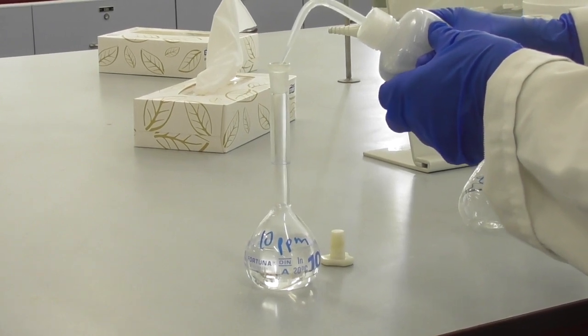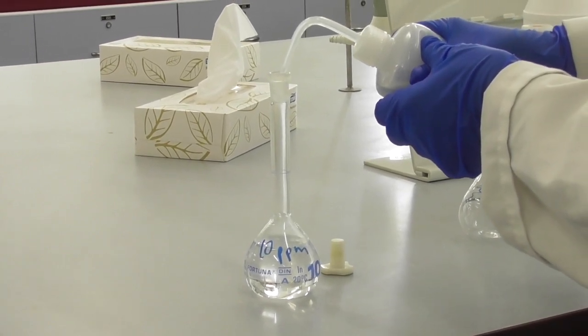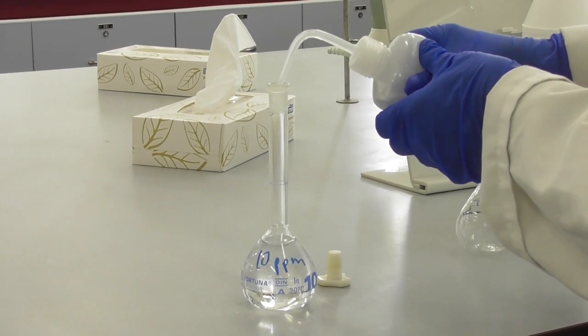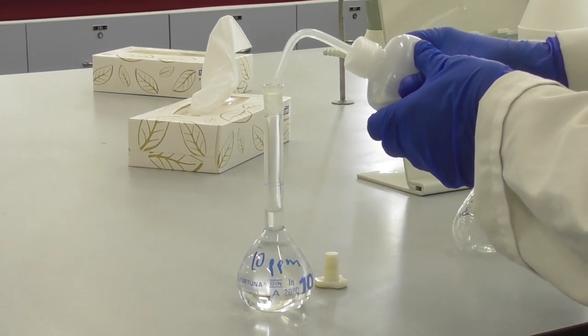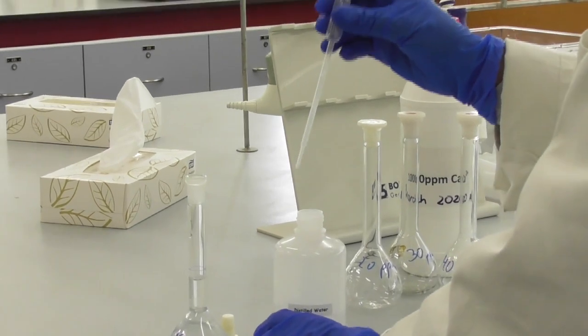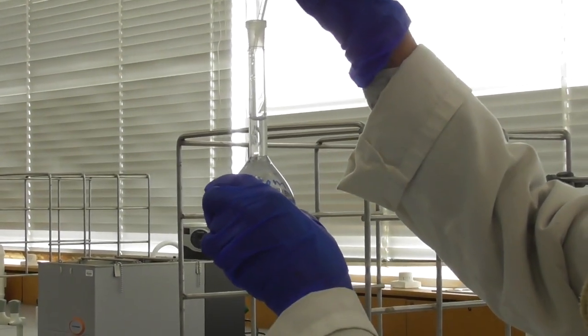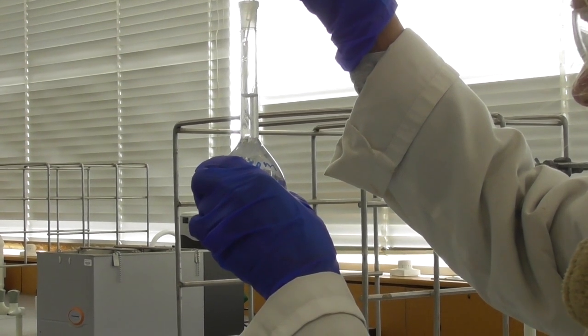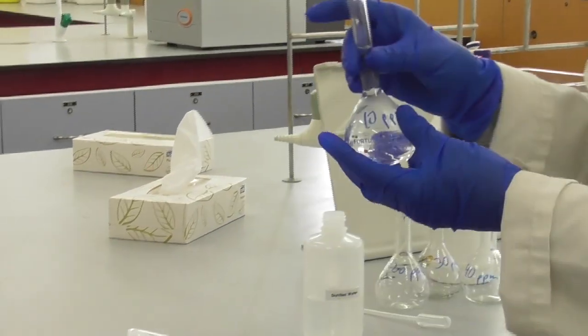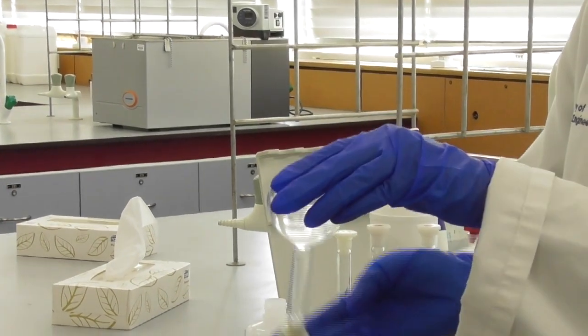I fill the flask to the line with distilled water. As usual when approaching the line, I use a dropper to add the last little bit of water and look at the fill level at eye level to ensure the meniscus sits exactly on the line. Again I have to invert the flask several times to make sure the solution is mixed well.